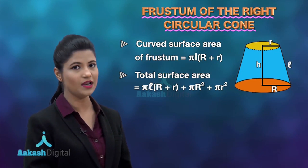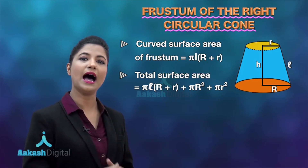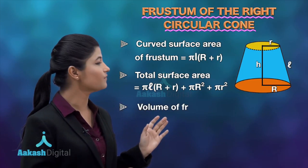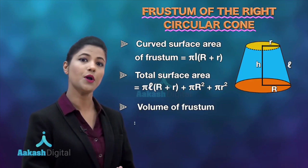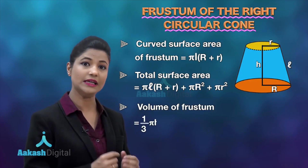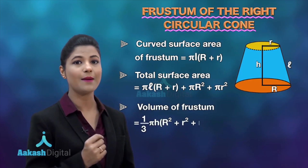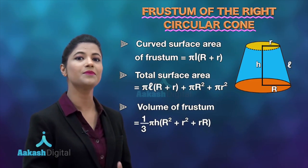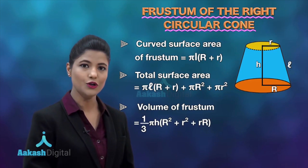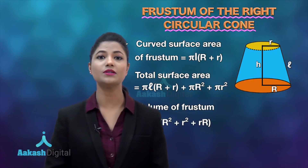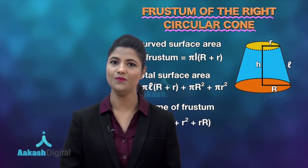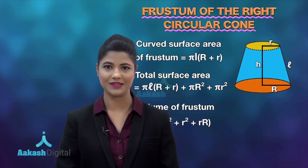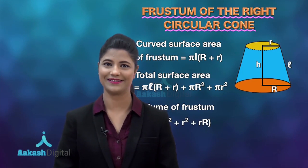Next, we have the volume of the frustum. The volume is given by the formula: (1/3)πh(R² + r² + rR). Using all these formulas, you can solve various questions related to surface areas and volumes of the frustum. This is all for now — thank you for watching.